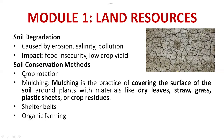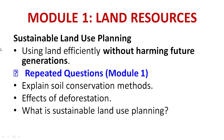Soil conservation methods include crop rotation, mulching, shelter belt, and organic farming. Mulching is the practice of covering the soil surface around plants with materials like dry leaves, straw, grass, plastic sheets, or crop residues — it helps retain nutrients. Sustainable land use planning means using land efficiently without harming future generations. Probable questions: soil conservation methods, effects of deforestation, sustainable land use planning.